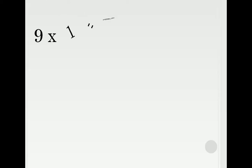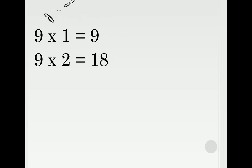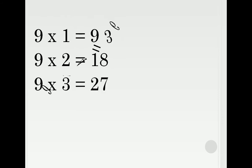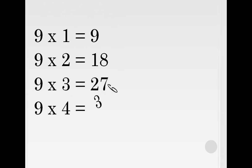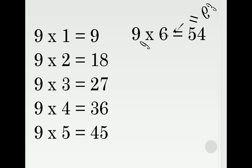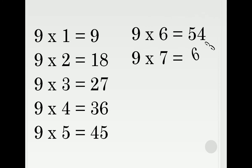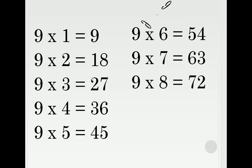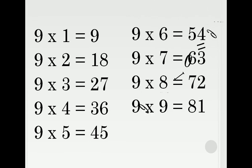9 ones are 9, 9 twos are 18, 9 threes are 27, 9 fours are 36, 9 fives are 45, 9 sixes are 54, 9 sevens are 63, 9 eights are 72, 9 nines are 81, 9 tens are 90.